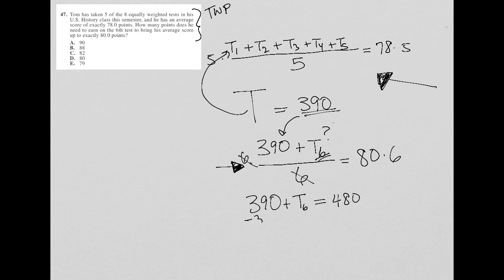We subtract 390 from both sides in order to isolate the test six variable. So test six or the score for test six is equal to 480 minus 390, which is 90.